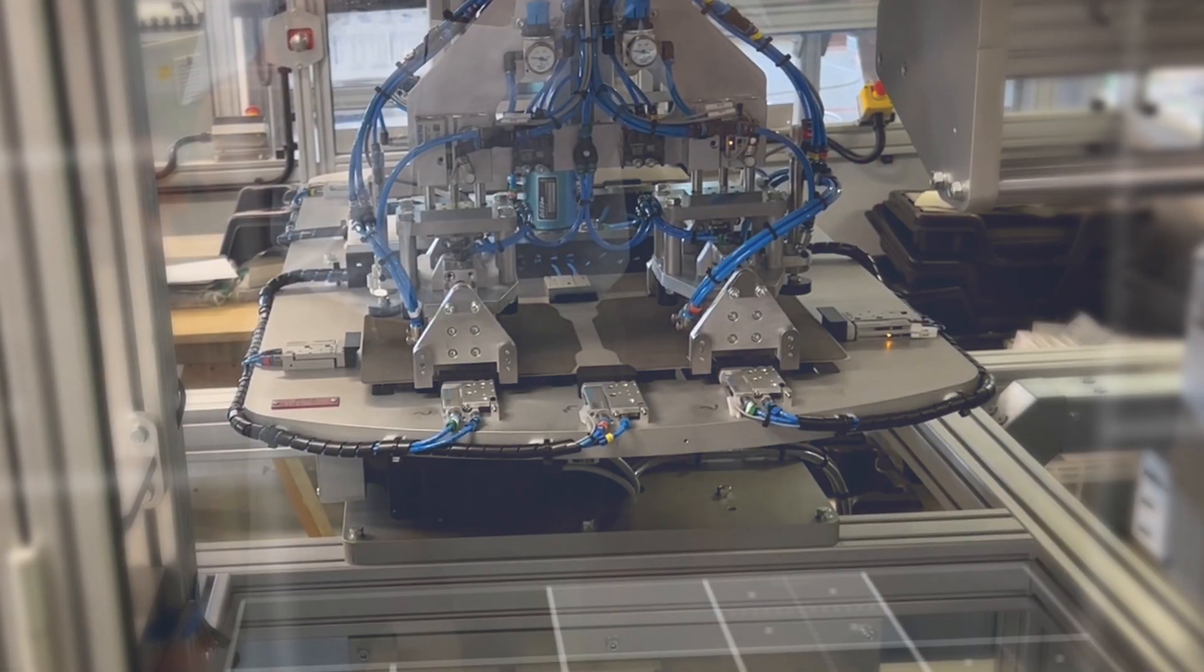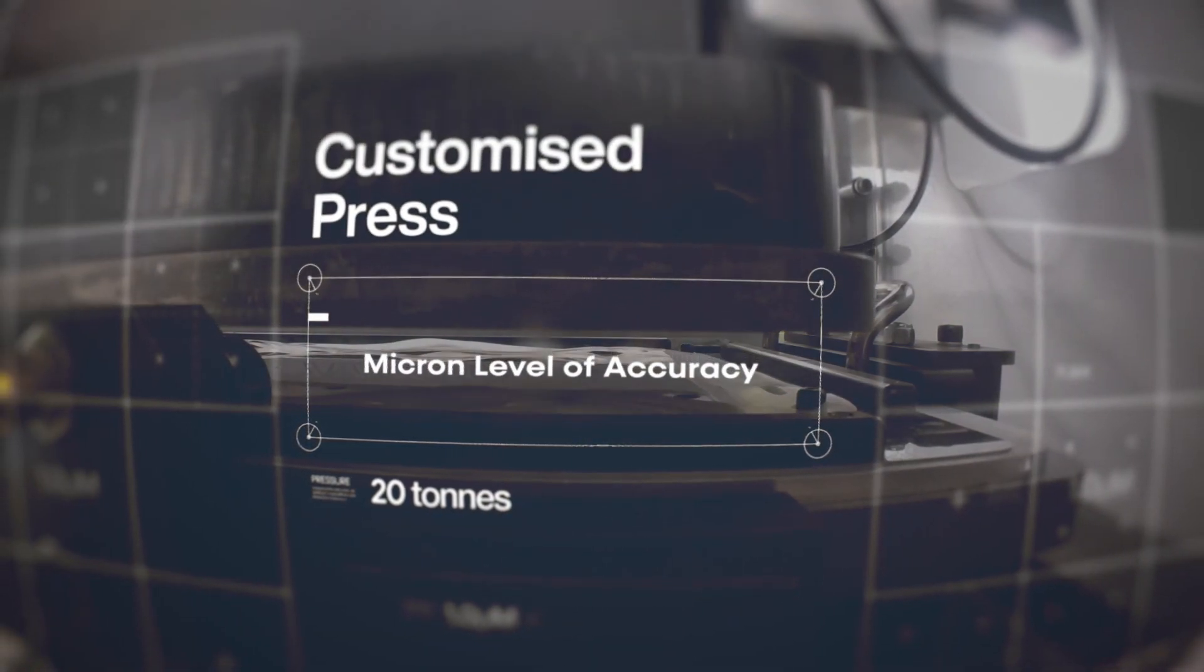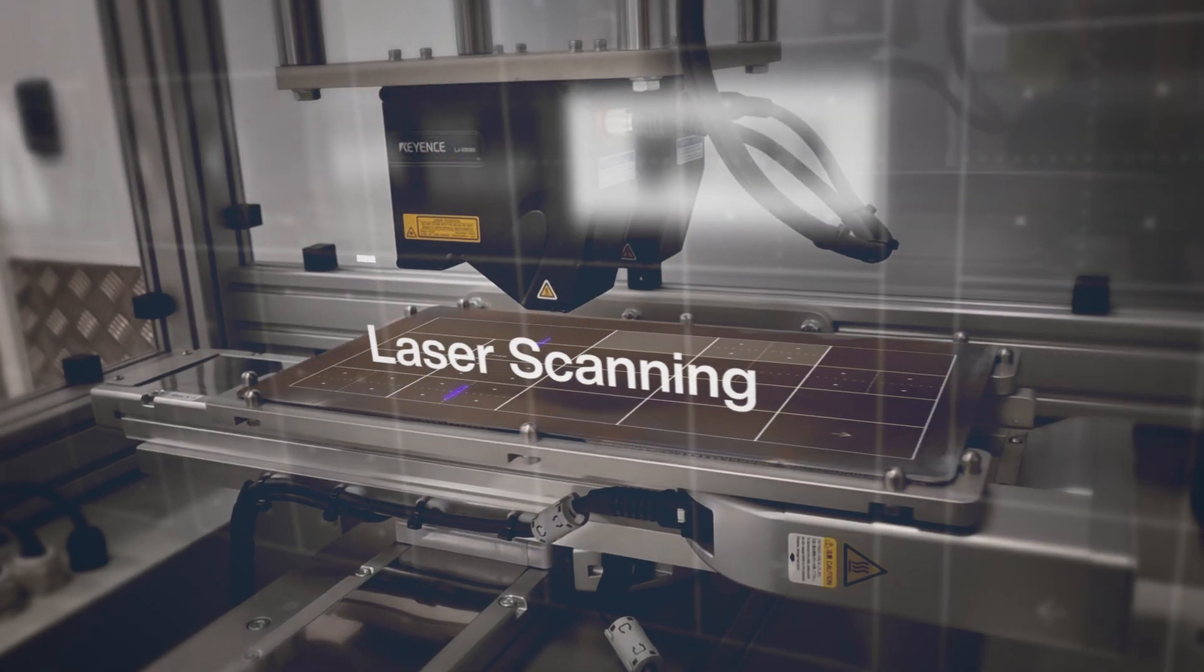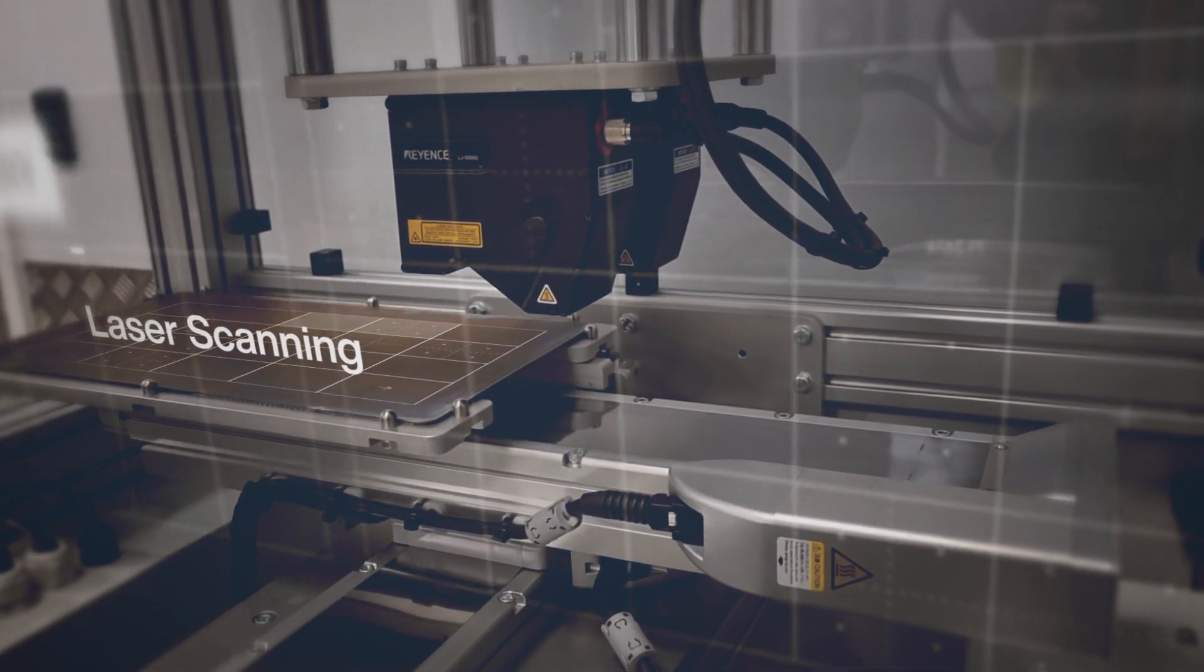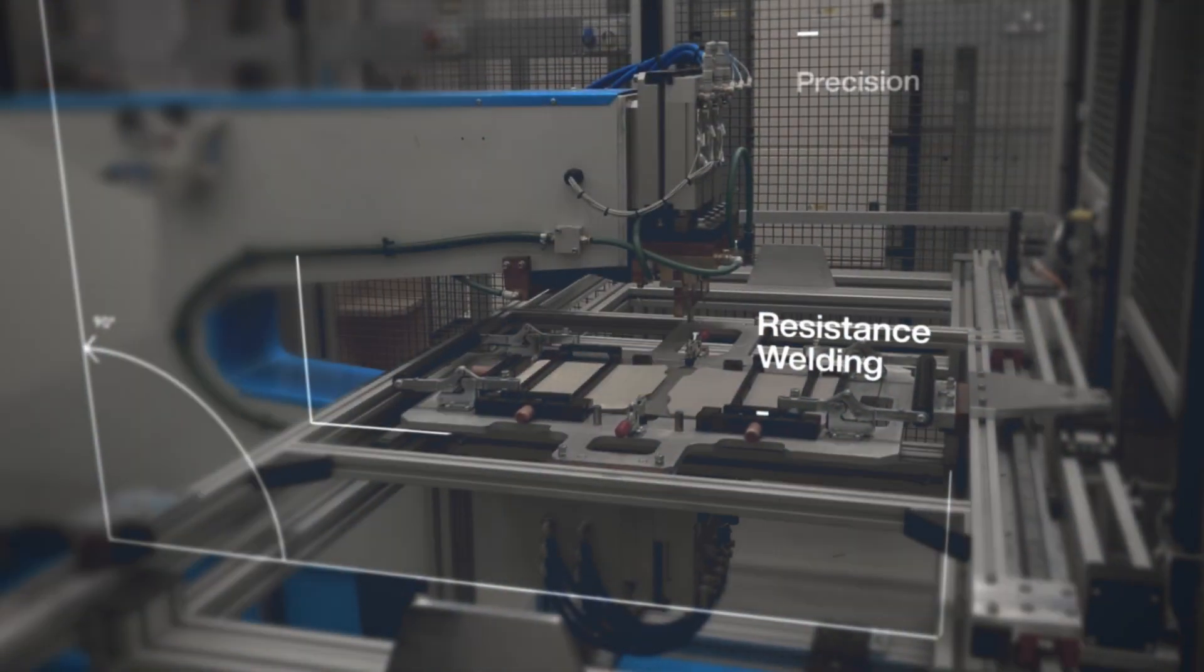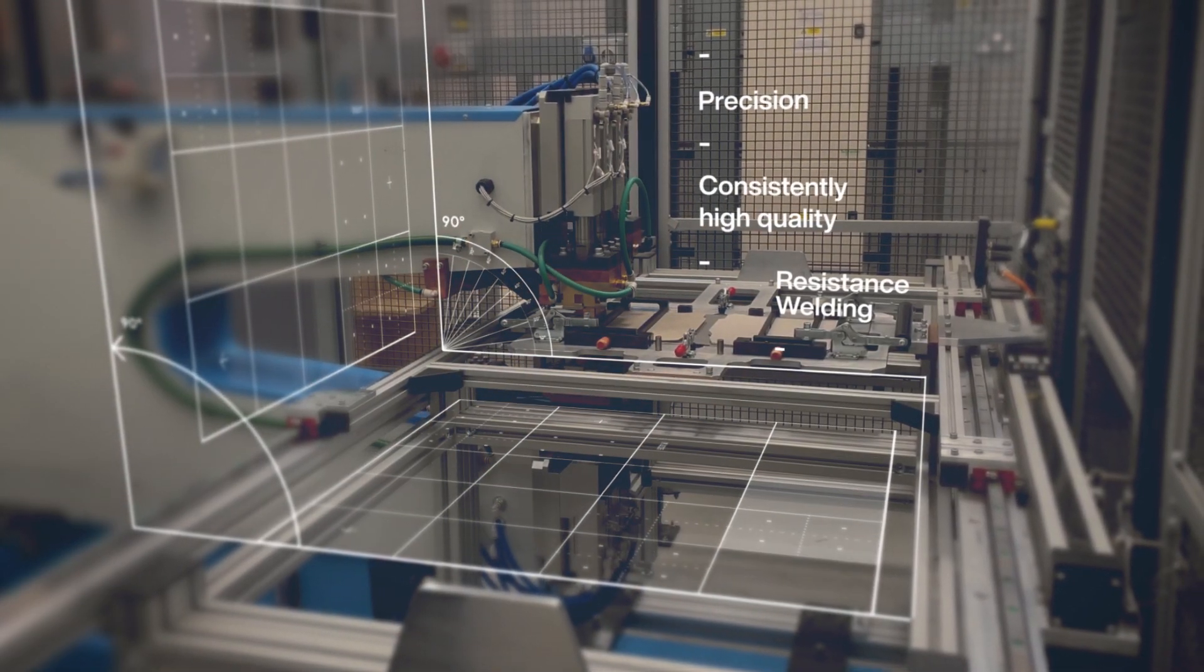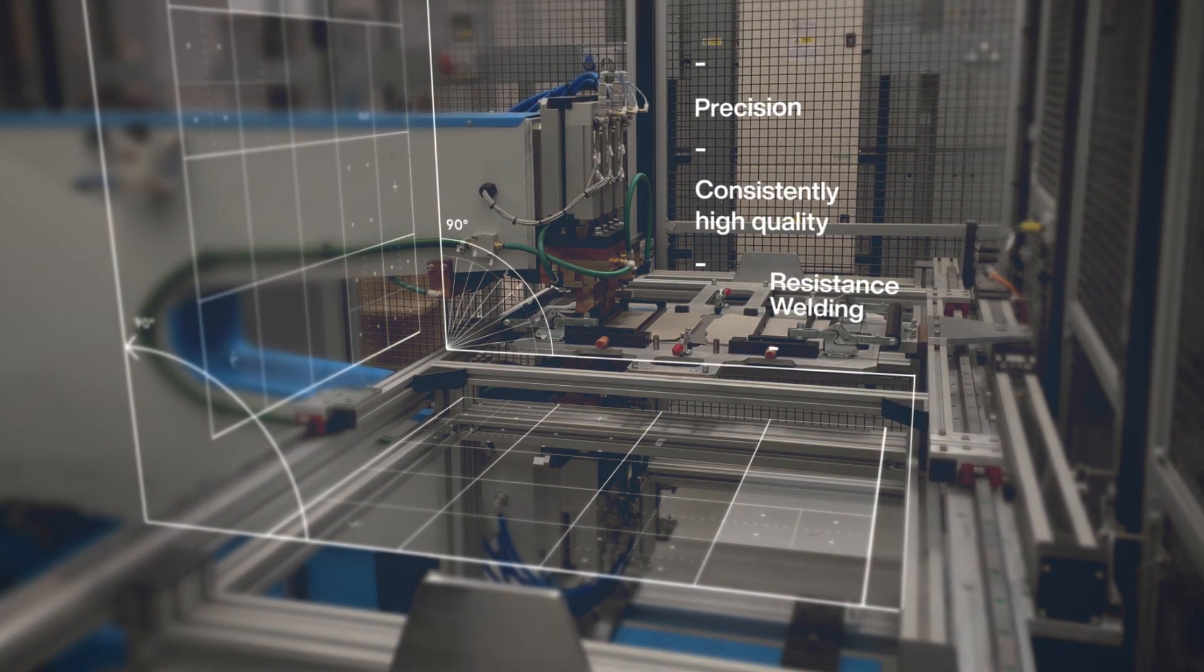Some of these processes include a customized press capable of operation at 20 tonnes of pressure with a micron level of accuracy, precision laser scanning allowing us to inspect every electrode structure, and a resistance welding machine developed in-house to assemble stack components with highest precision.